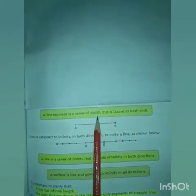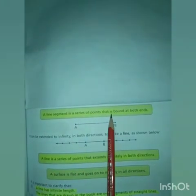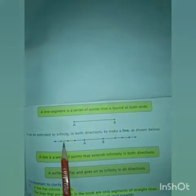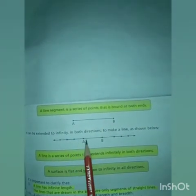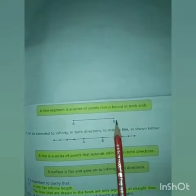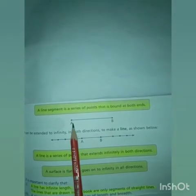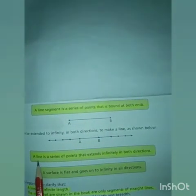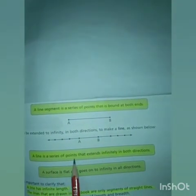Next: Line Segment. A line segment is a series of points that is bound at both ends. Jaise yeh points lage hue hain, in points ko jab hum join karte hain, mila lete hain, to yeh hamare paas line segment ban jaata hai. Jaise yeh two dots lage hain — two points lage hue hain — in ko humne ek line ke saath join kar liya, to yeh hamare paas line segment hai.